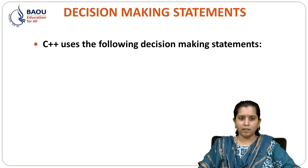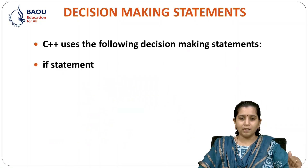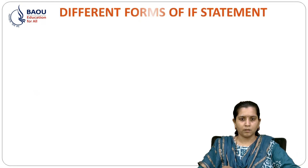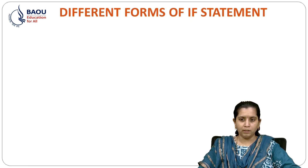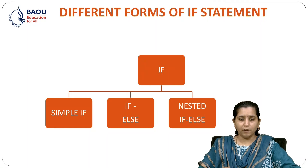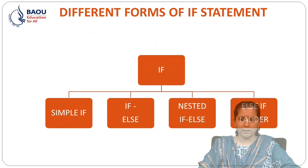Decision Making Statements. C++ uses the following Decision Making Statements. First is IF statement and second is SWITCH statement. There are different forms of IF statement in C++: simple IF, IF ELSE, nested IF ELSE, and ELSE IF LADDER.